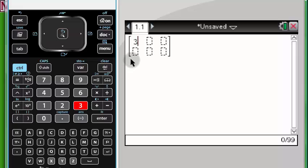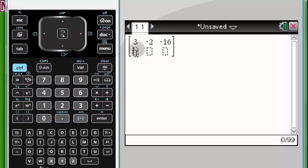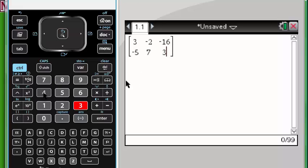I'm going to put those numbers in. That was 3, negative 2, negative 16, negative 5, 7, and 34. Sometimes people use the keypad to go back and forth to move your way around. I was clicking on the screen, kind of doing a hybrid model. But basically, use the keypad to move your way around the matrix.